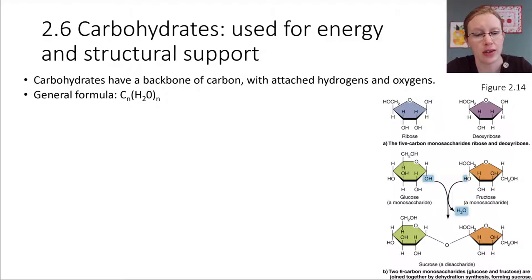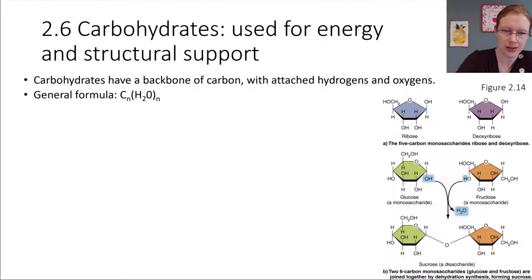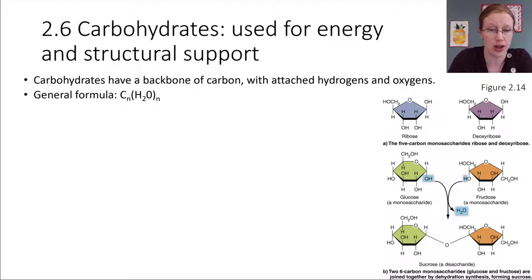First up we have the carbohydrates. These are the types of molecules that are really great for a quick energy source for our bodies — for each of our cells individually, and for us as people as a whole. Carbohydrates are molecules that are basically sugars and sugars put together into longer chains. They're all built from a basic backbone of carbon, and there's also a lot of hydrogen and oxygen involved. In general, the ratio is some number of carbons and then the ratio of hydrogens to oxygens is two to one.